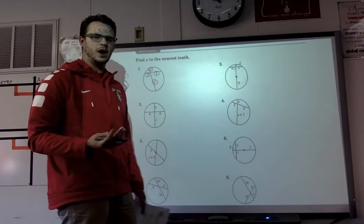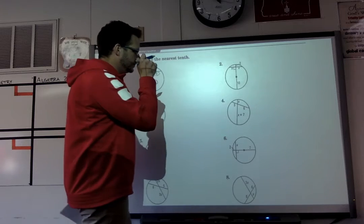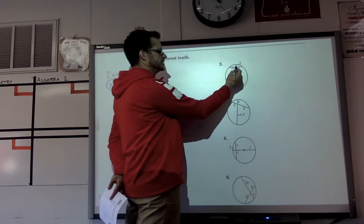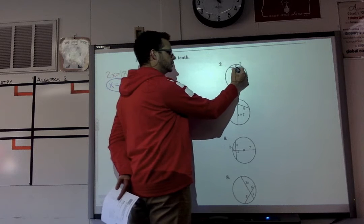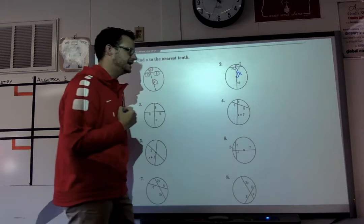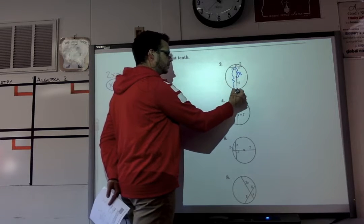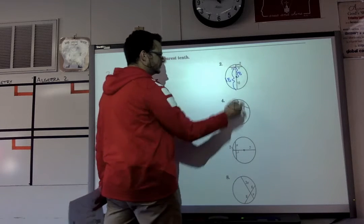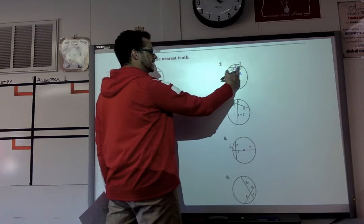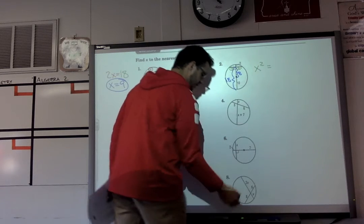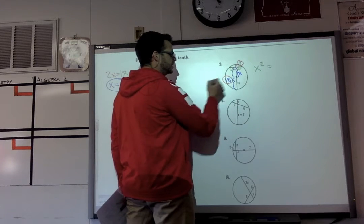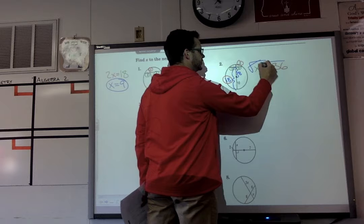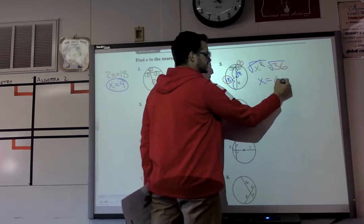Number two is not quite as straightforward. I need to figure out that the radius of the circle is equal to 10, so this radius here will also be equal to 10. But there's a portion of it that's 2, so the remaining portion is 8 units, which means this entire segment of this chord will be 18. So I'm going to say X times X — the two portions of that chord — so X squared is equal to the two portions of the other chord, which is 2 times 18, giving me 36. Taking the square root of each side, X equals 6.